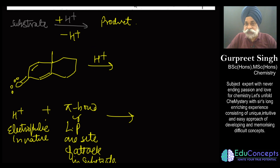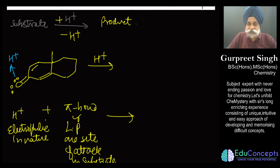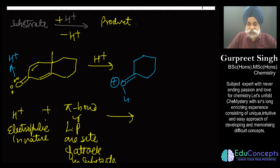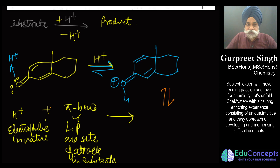If there is no complexity in the question, first go for attack on the lone pair. H⁺ attacks the lone pair on the oxygen, and you end up getting a protonated intermediate. All these steps occur in equilibrium.